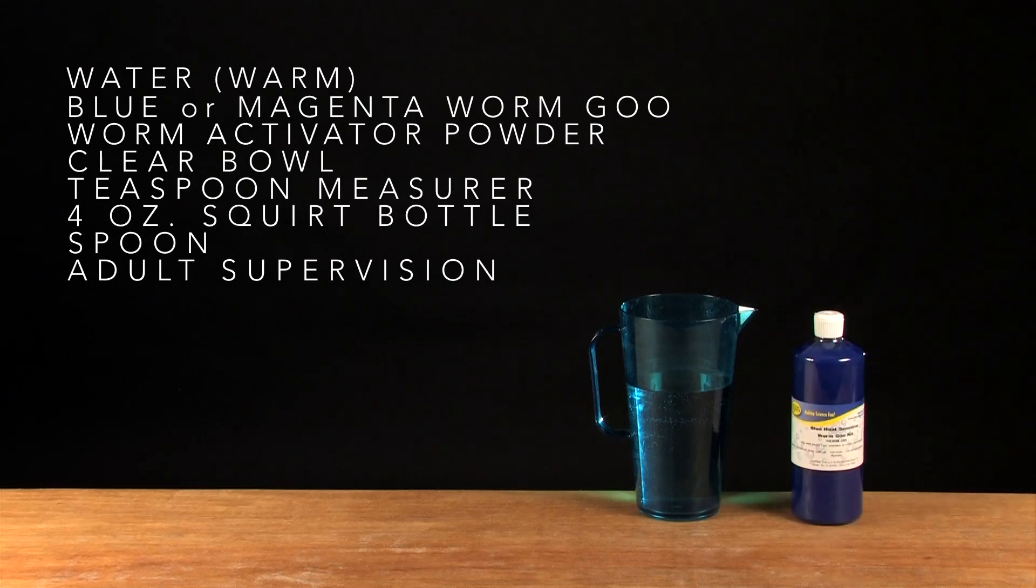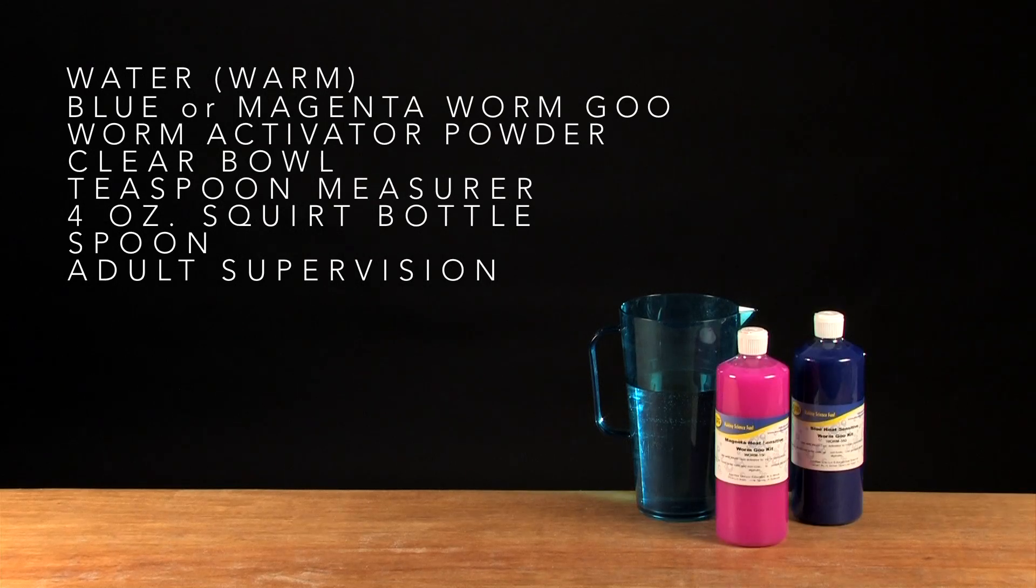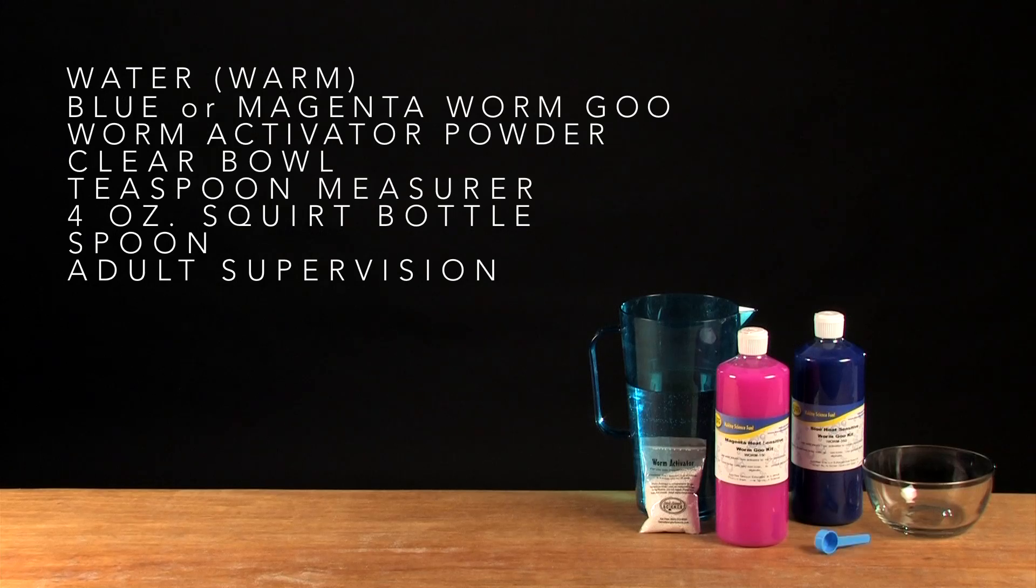Water, blue or magenta heat-sensitive worm goo, worm activator powder, clear bowl, teaspoon measurer, 4-ounce squirt bottle, and a spoon.